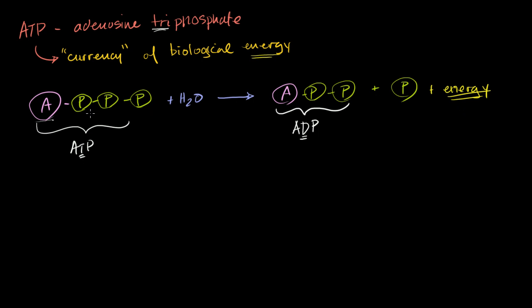And so when I talk about ATP being the currency of biological energy, this is why. If you have ATP, and if you were to, through some chemical reaction, pop off this phosphate right here, it's going to generate energy. That energy can be used for just general heat, or you could couple this reaction with other reactions that require energy, and then those reactions will be able to move forward.